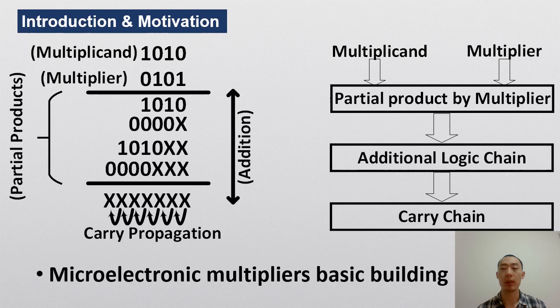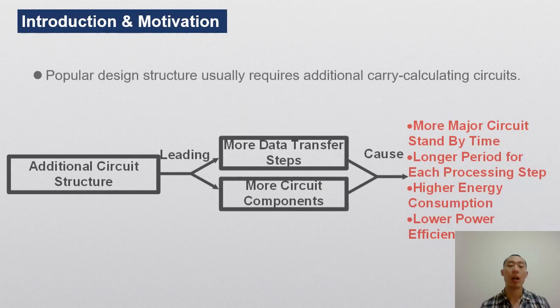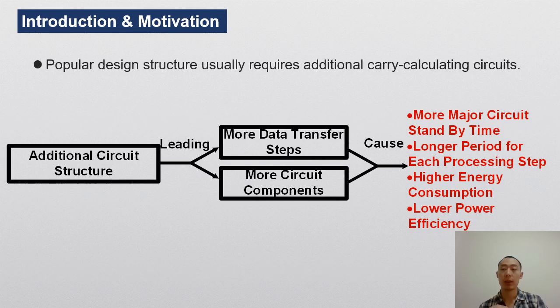However, the carry propagation needs additional logic chain to generate respective carry chain. On circuit level, additional logic chain means a digital circuit structure. However, the additional circuit structure needs more data transfer steps and more circuit components. These issues will lead to following problems.